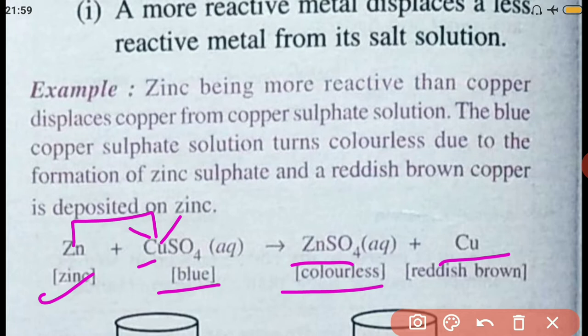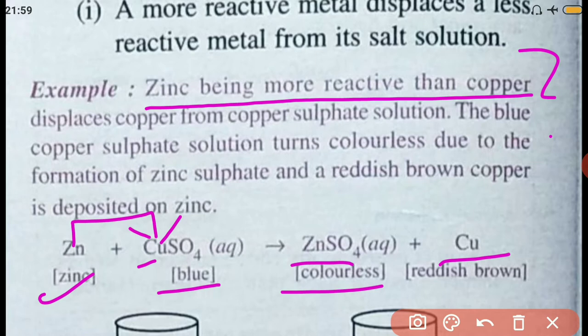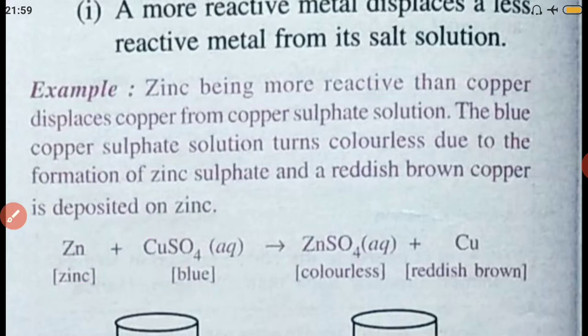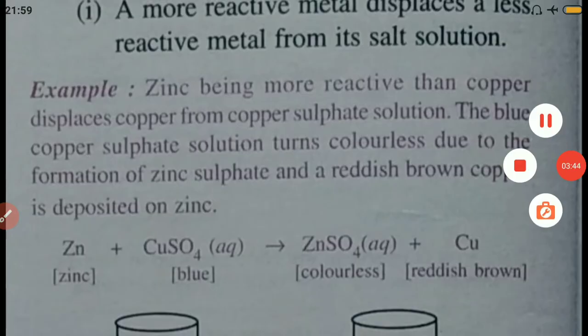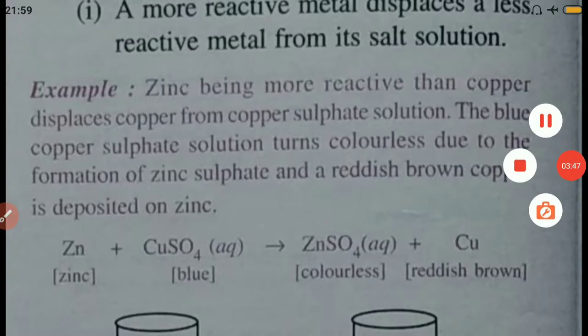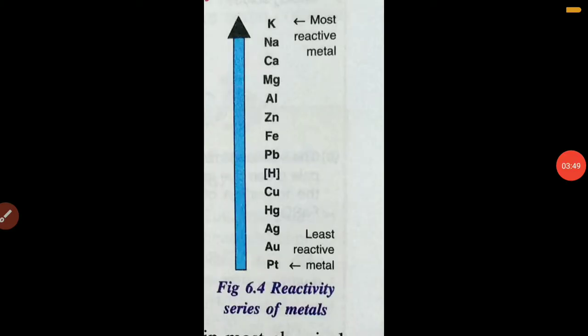How do we come to know that zinc is more reactive than copper? This we know from a series called the metal reactivity series, which we shall study in detail later. Now I will just explain a bit of it here.